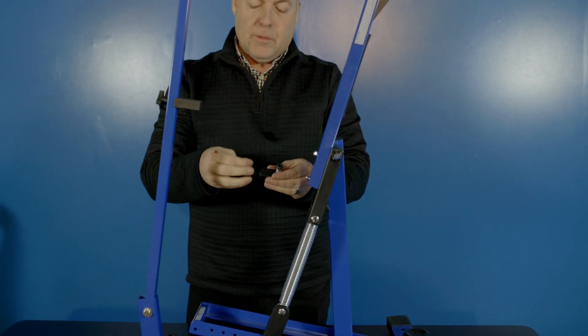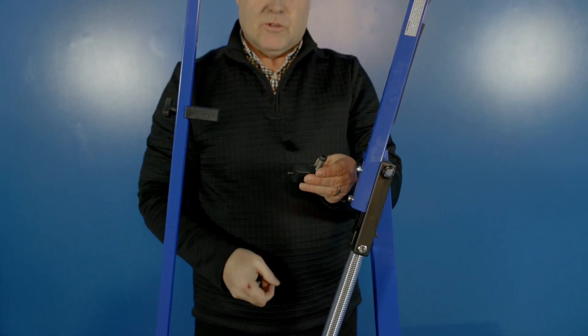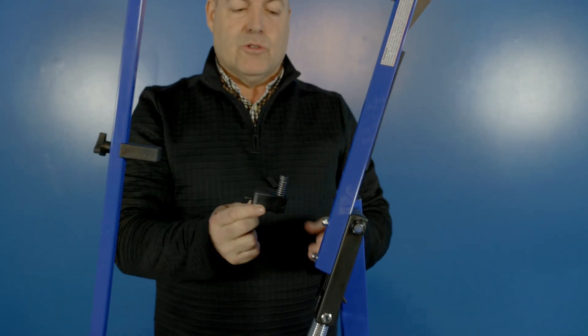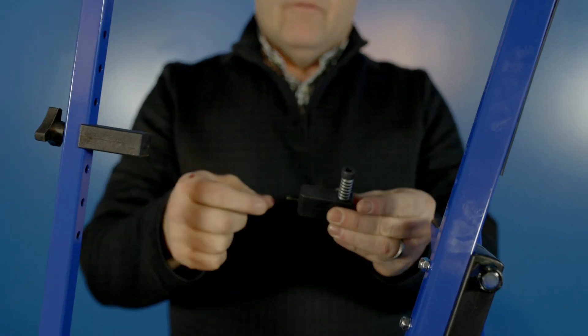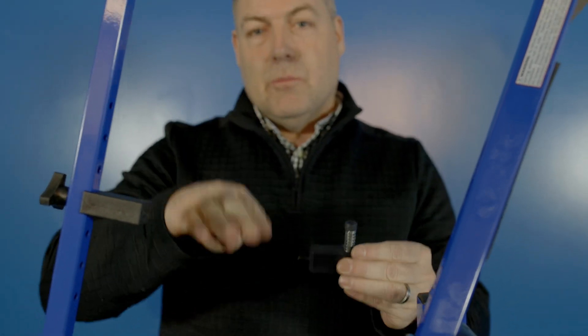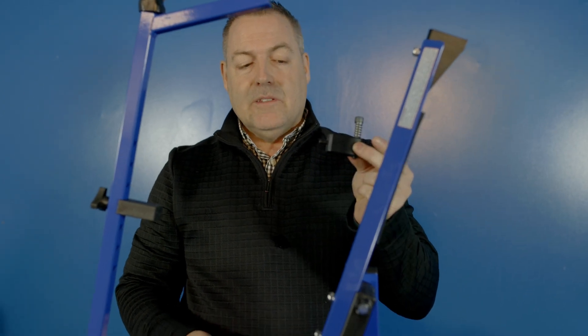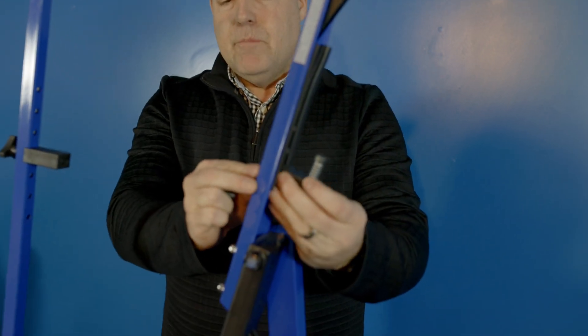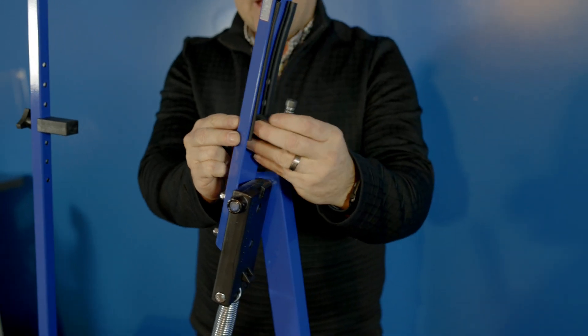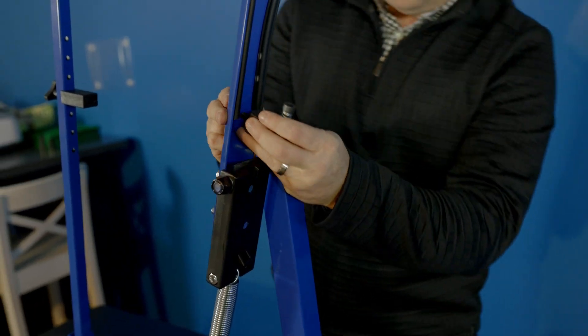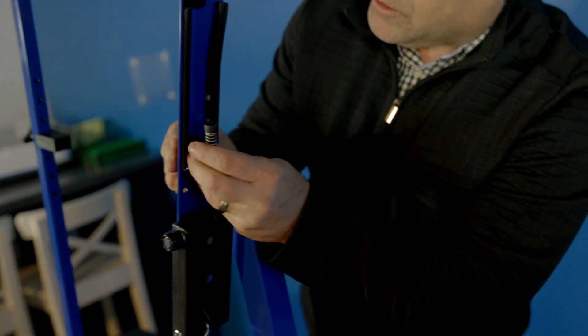The next step is going to be the micro-adjustment screw. So the micro-adjustment screw is meant for modifying the pitches to move them up and down in small increments in the strike zone. I'm going to take this and I'm going to drop it right in the middle. There's holes in the back of the throwing arm. I'm going to just line them up with one of those holes.